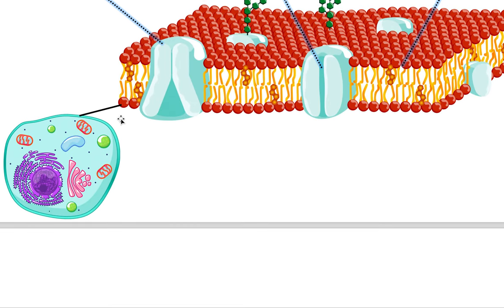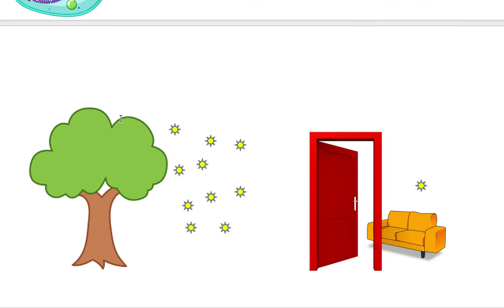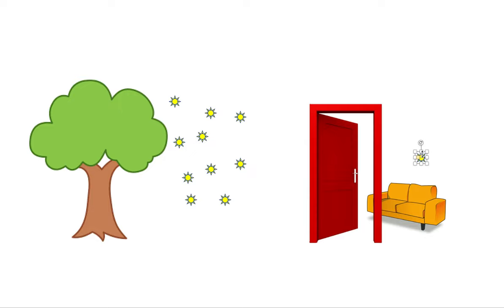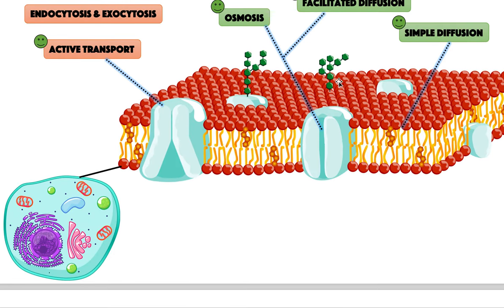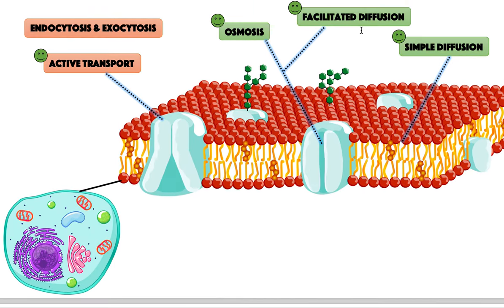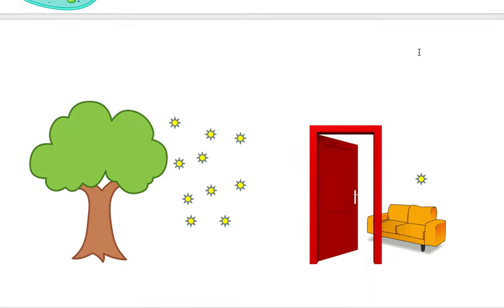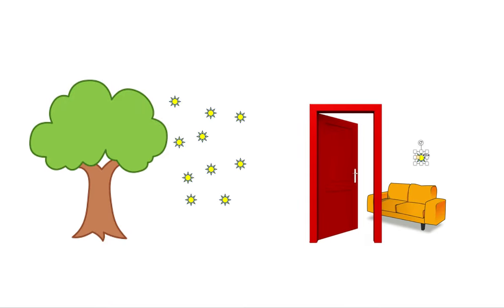Active transport is the process by which molecules move across a membrane — in this case represented by the door — from an area of low concentration to an area of high concentration. Basically, the exact opposite of simple diffusion and facilitated diffusion, because these two were responsible for moving molecules down their concentration gradient. Now, we're moving against the concentration gradient.